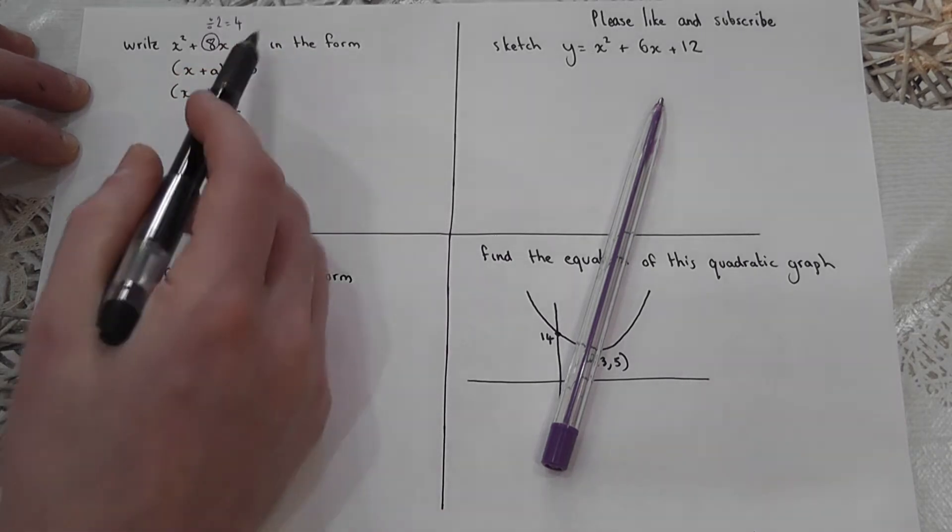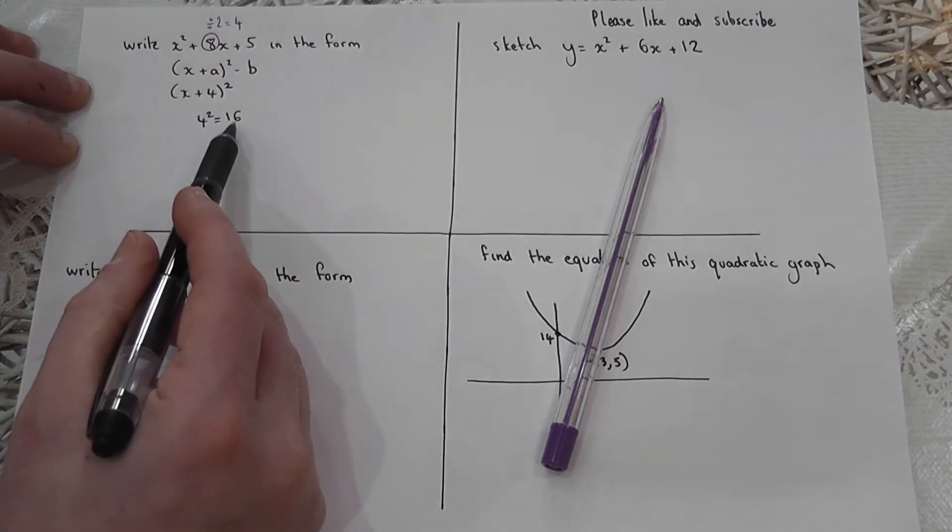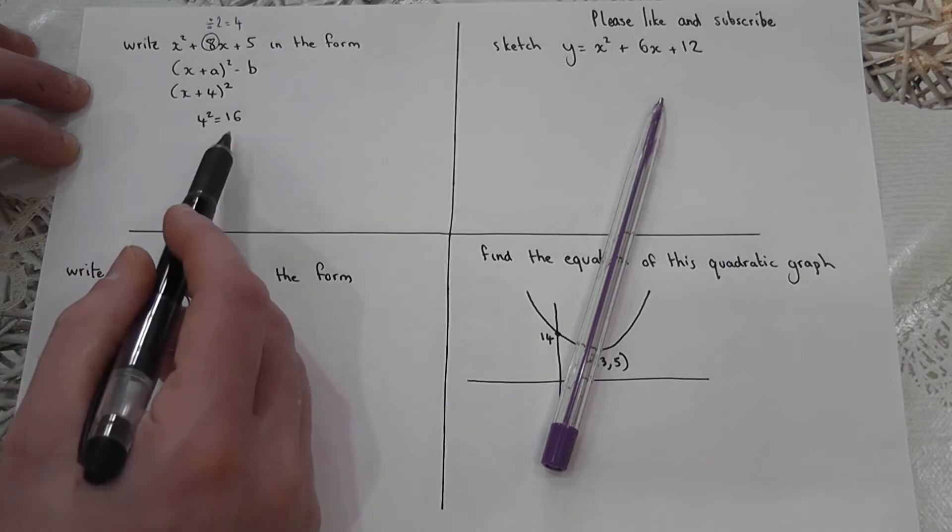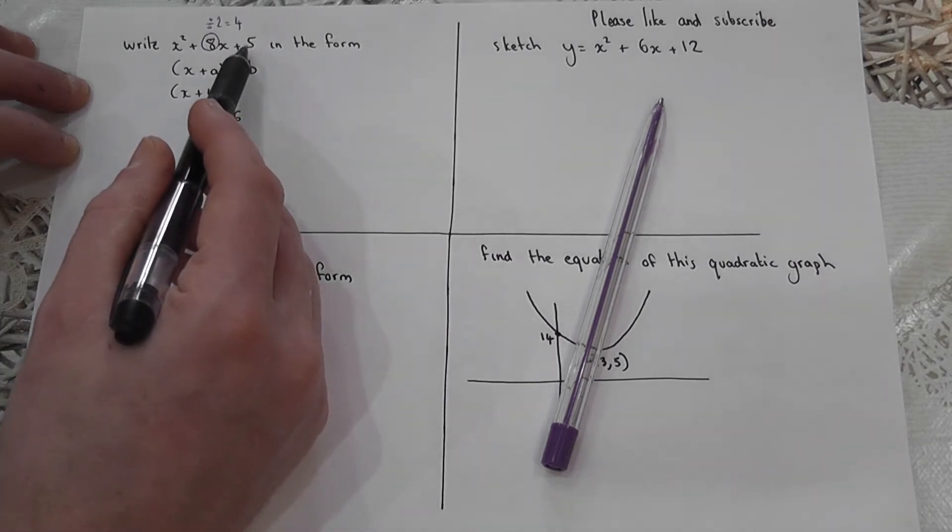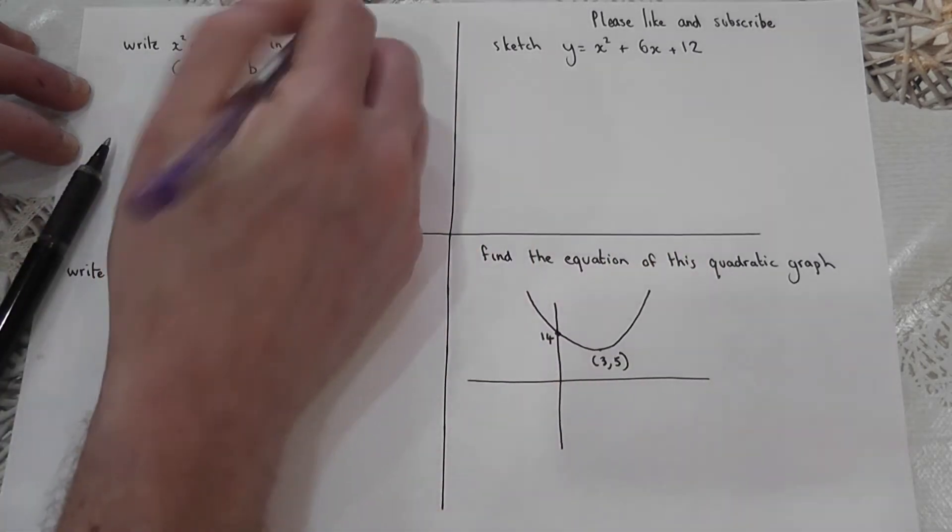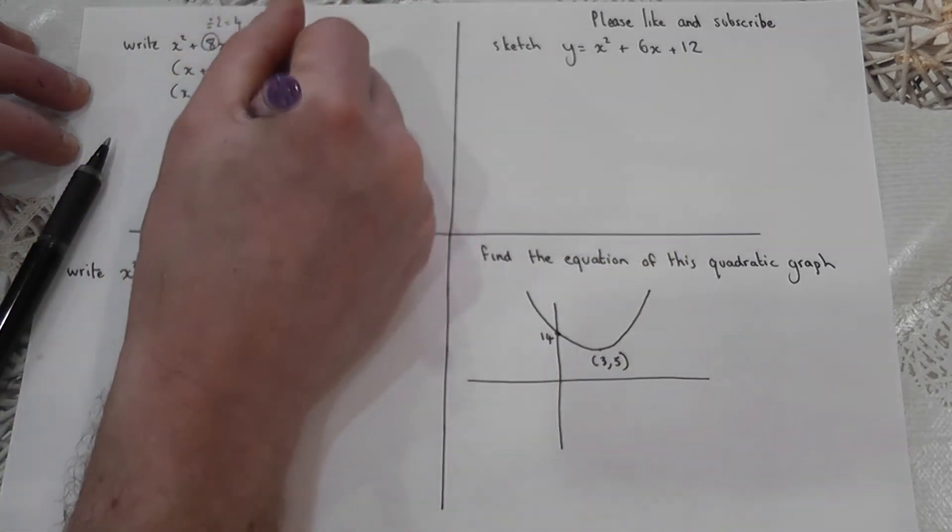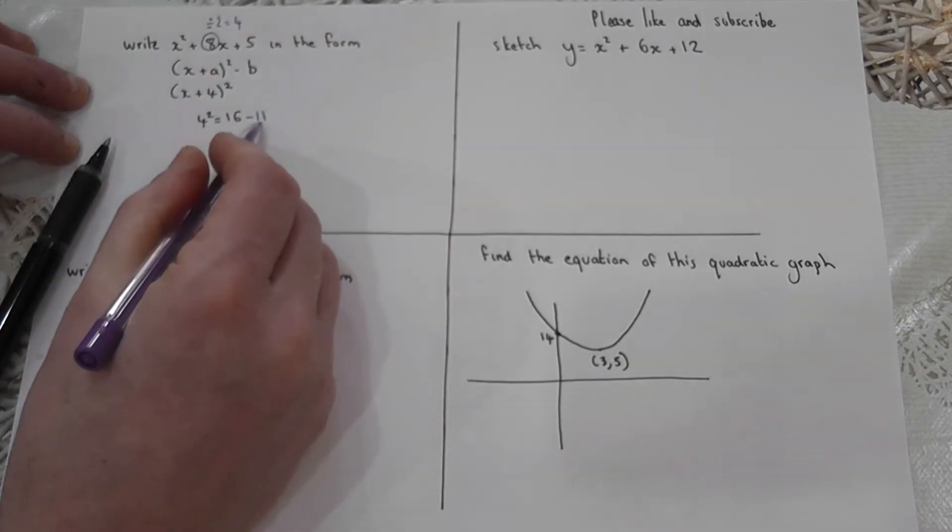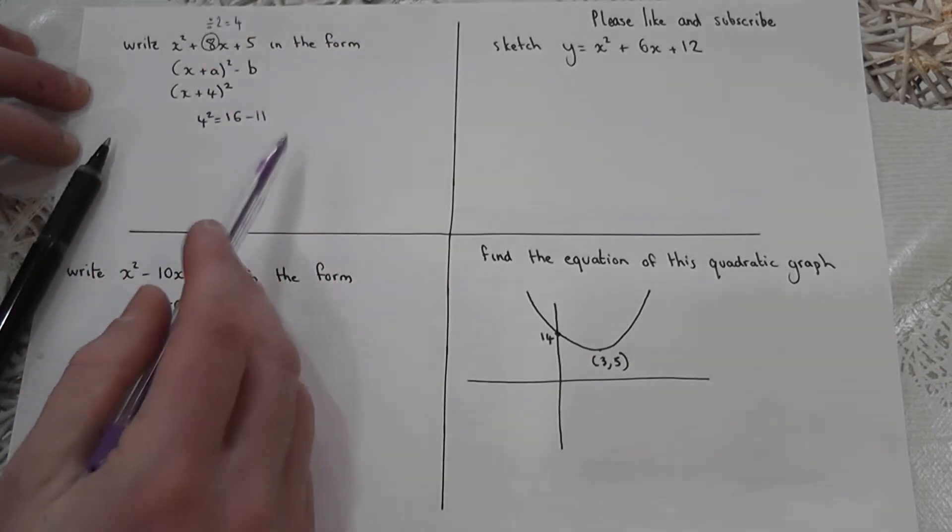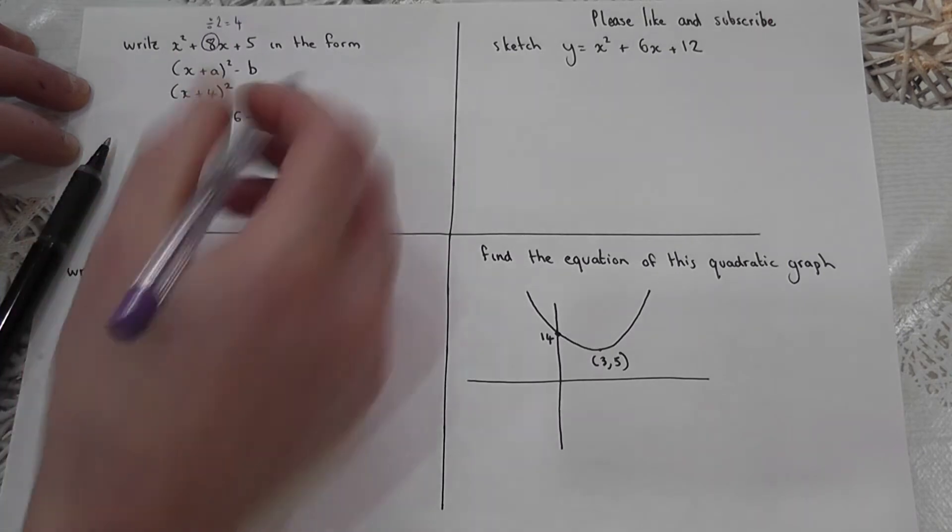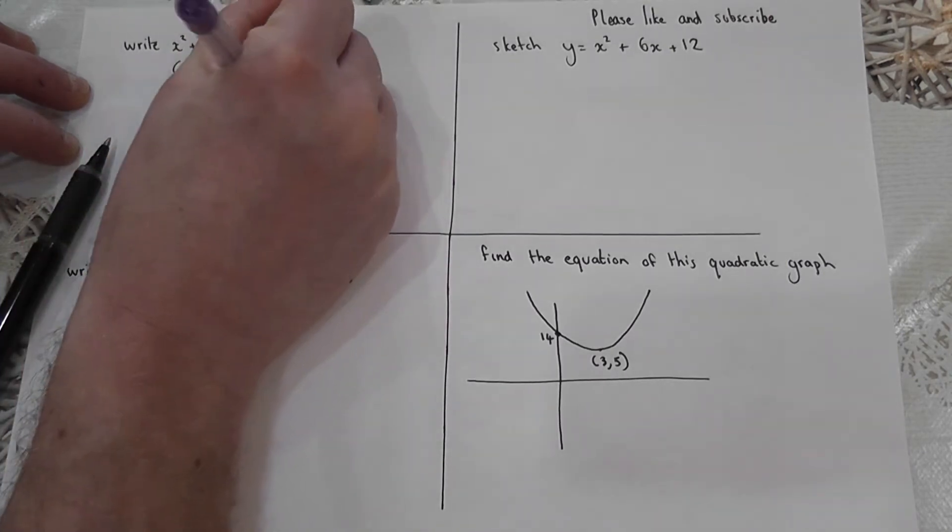But I need a five in the answer, not a 16. To make this correct, I'm going to get 16 back down to five. To achieve this, I've got to take away a number, which is take away 11, because 16 take away 11 is five. So the answer is x plus four squared, take away 11.